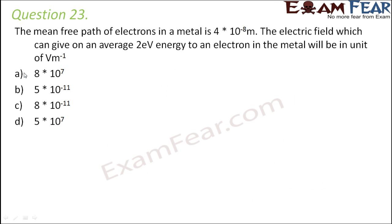Question number 23: The mean free path of electrons in a metal is 4 into 10 to the power minus 8 meters. The electric field which can give on an average 2 electron volt energy to an electron in the metal will be in unit of volt per meter. So we basically need to calculate the value of the electric field.